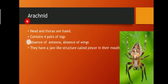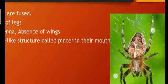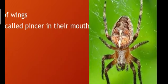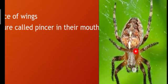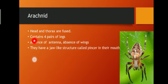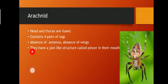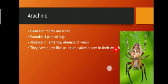Coming to Arachnida. Arachnida also have the head and thorax region fused. If we look at the structure of a spider — spider comes under Arachnida — you can see that the head and thorax region are fused with one abdominal region. The head and thorax region contains four pairs of legs. There is an absence of antennae and wings. They have a jaw-like structure called a pincer in their mouth, with the help of which they feed on prey.